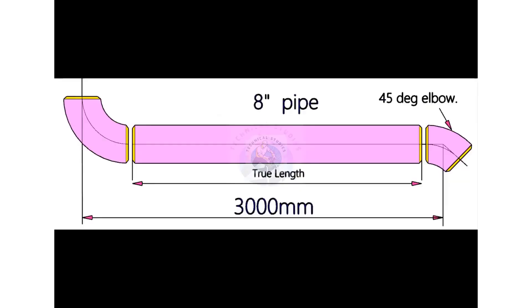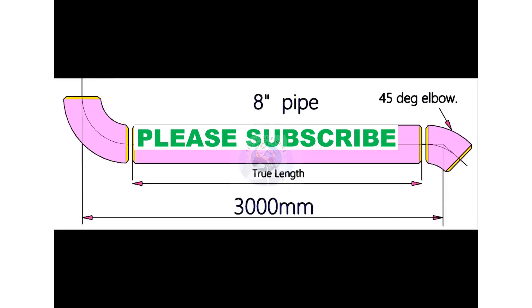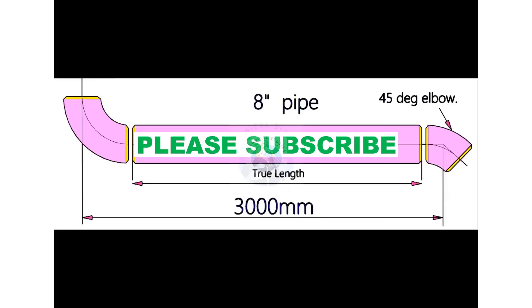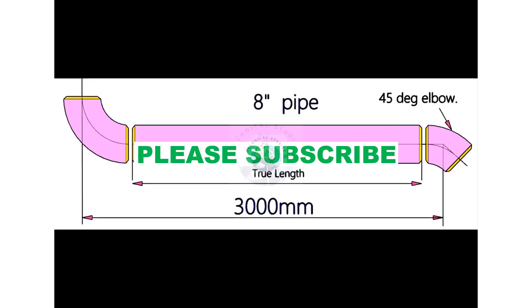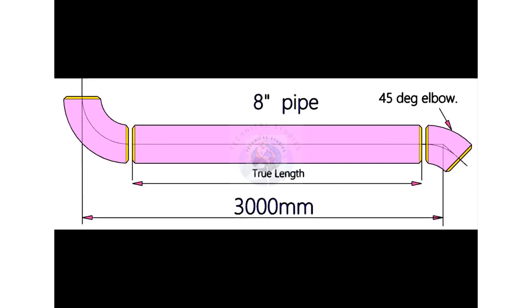Let us try another example. This piping has an 8 inch 90 degree long radius elbow and a 45 degree elbow. To calculate the take off of a 45 degree elbow, multiply the diameter in inches by 0.4142.